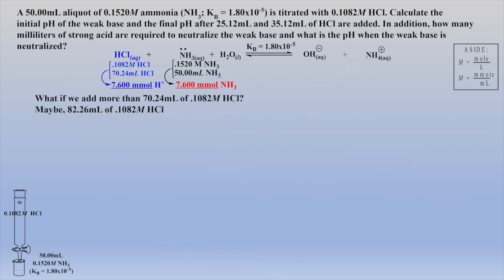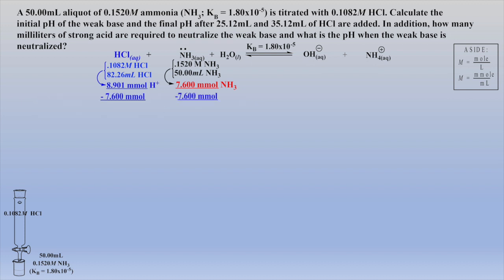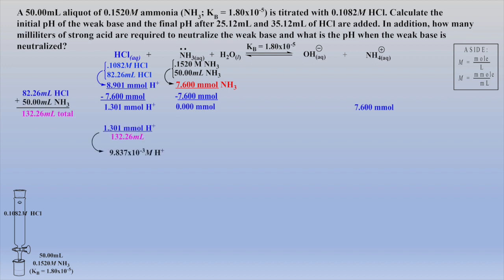Now let's look at a calculation when more than 70.24 milliliters of the 0.1082 molar hydrochloric acid is added — say 82.26 milliliters. We first convert both quantities to millimoles, followed by the stoichiometric calculation involving acid and weak base, which affords 1.301 millimoles of excess protons and 7.6 millimoles of conjugate acid. Dividing the millimoles of excess acid by the new total volume gives the final molarity of acid. The 7.6 millimoles of ammonium will produce some protons, but this amount is negligible compared to the protons from the excess acid. The final pH can then be easily calculated.